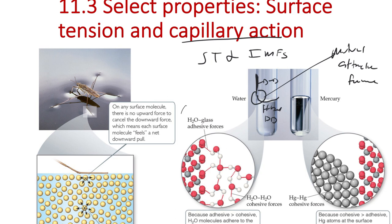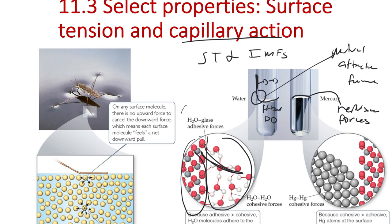Mercury actually forms a downward meniscus — this happens when you get repulsive forces between the liquid and the material. Mercury has more of a metal-metal bond, which isn't as compatible with silicates as water is. Water is attracted to the silicates so it forms an upward meniscus; mercury is repelled by the silicates so it forms a downward meniscus.